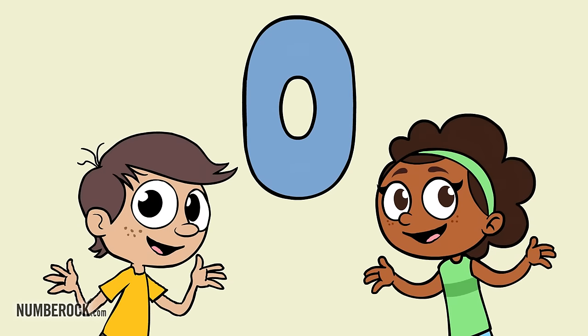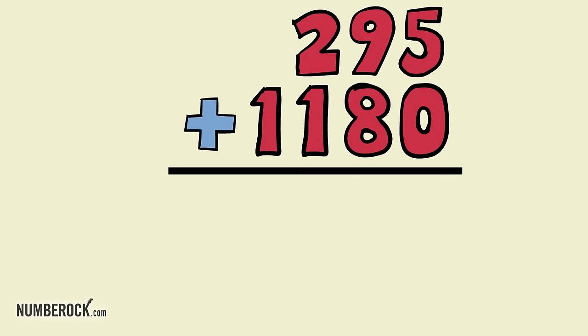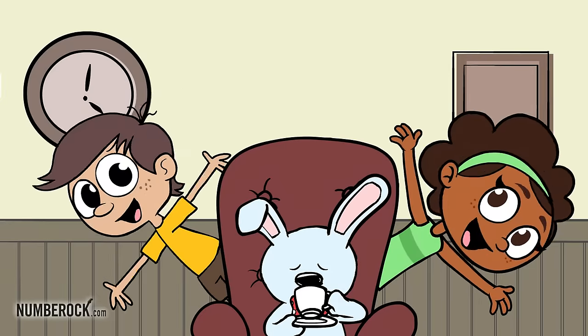We need to add a zero when we multiply the tens. Add the numbers up, and that's the product.